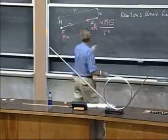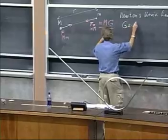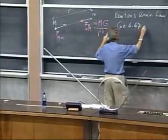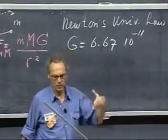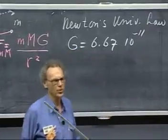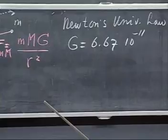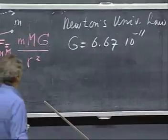The gravitational constant, G, is an extremely low number, 6.67 times 10 to the minus 11 in our SI units, which is Newton square meters per kilogram. That's an extremely low number.